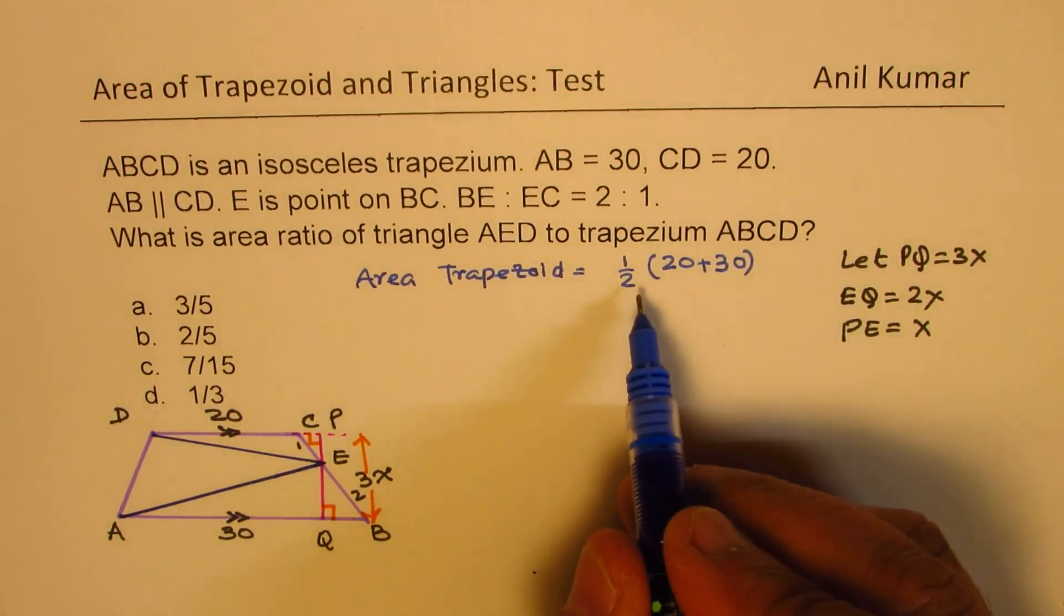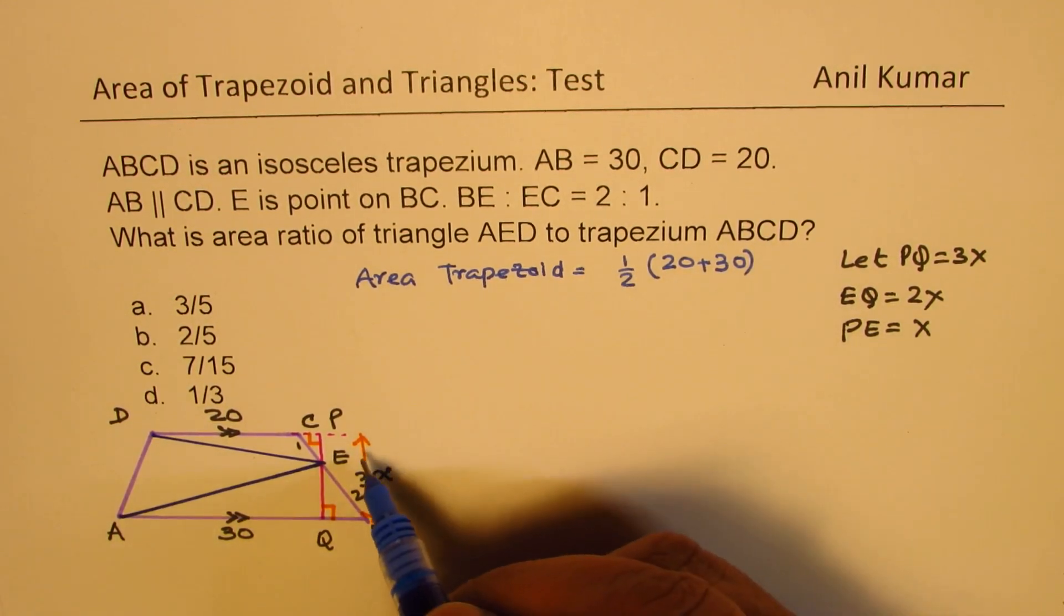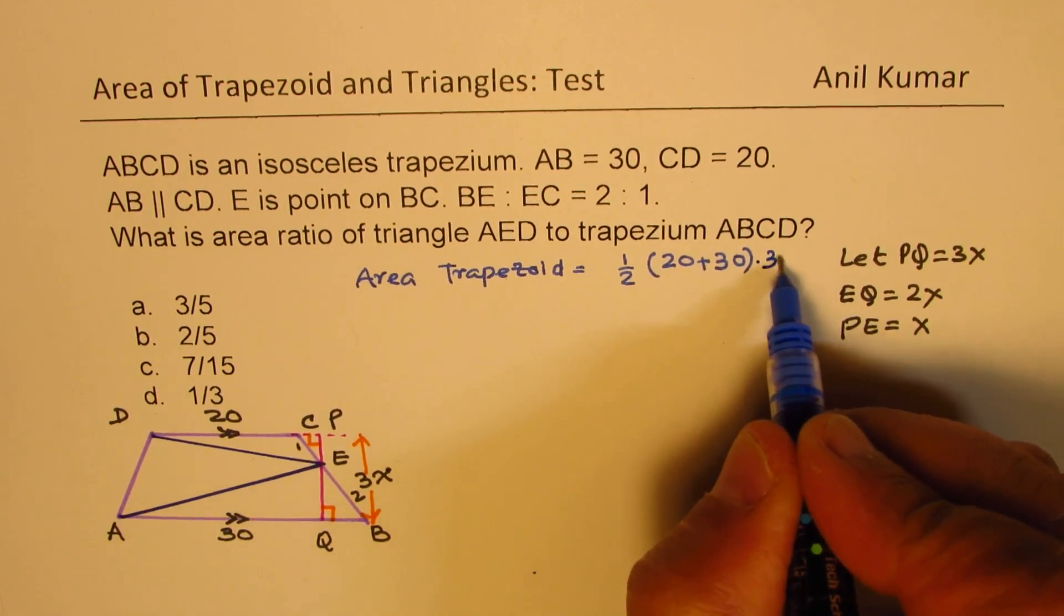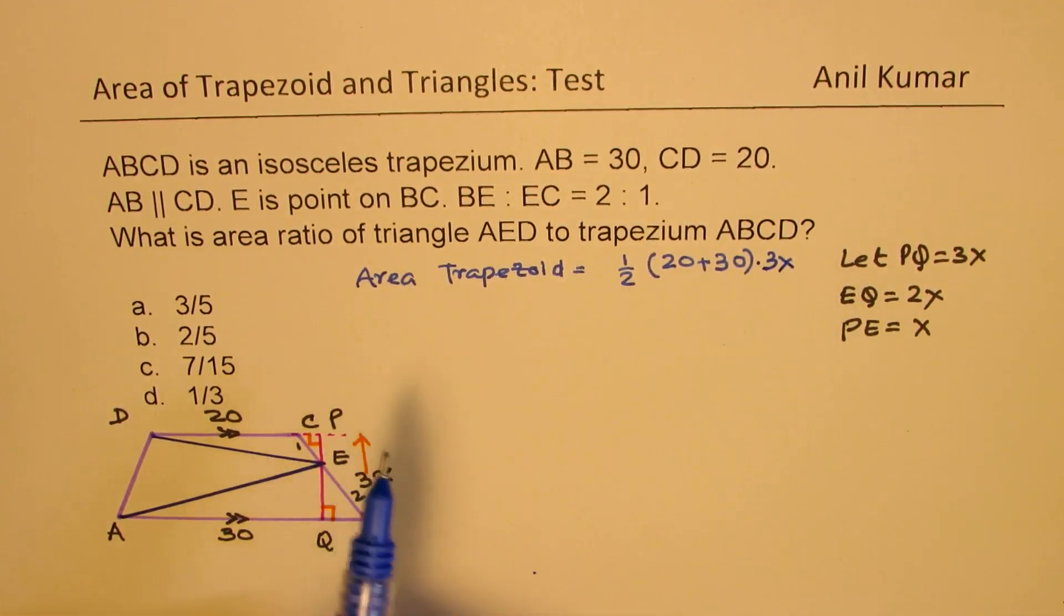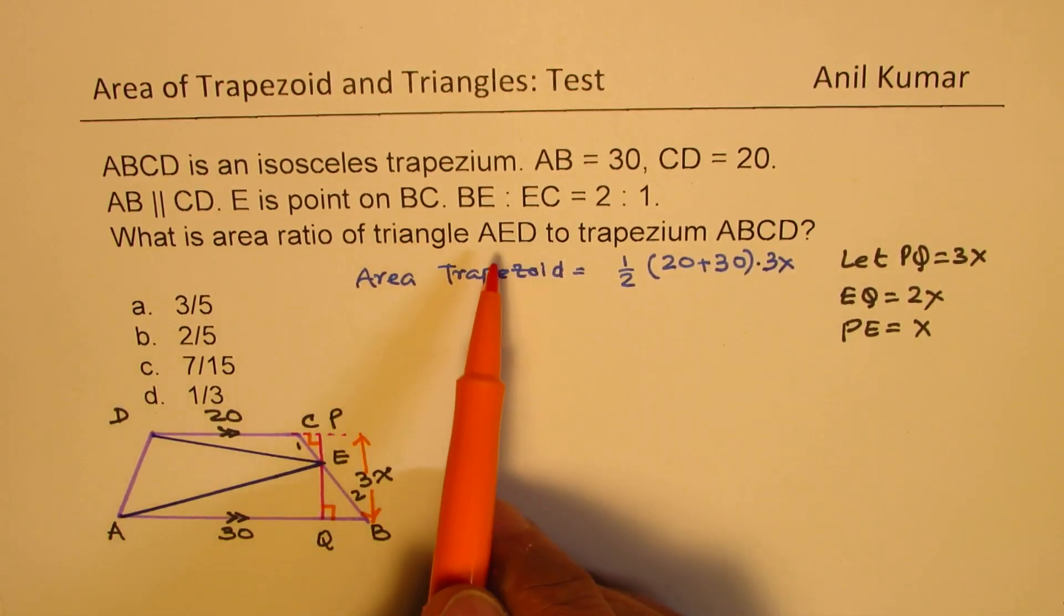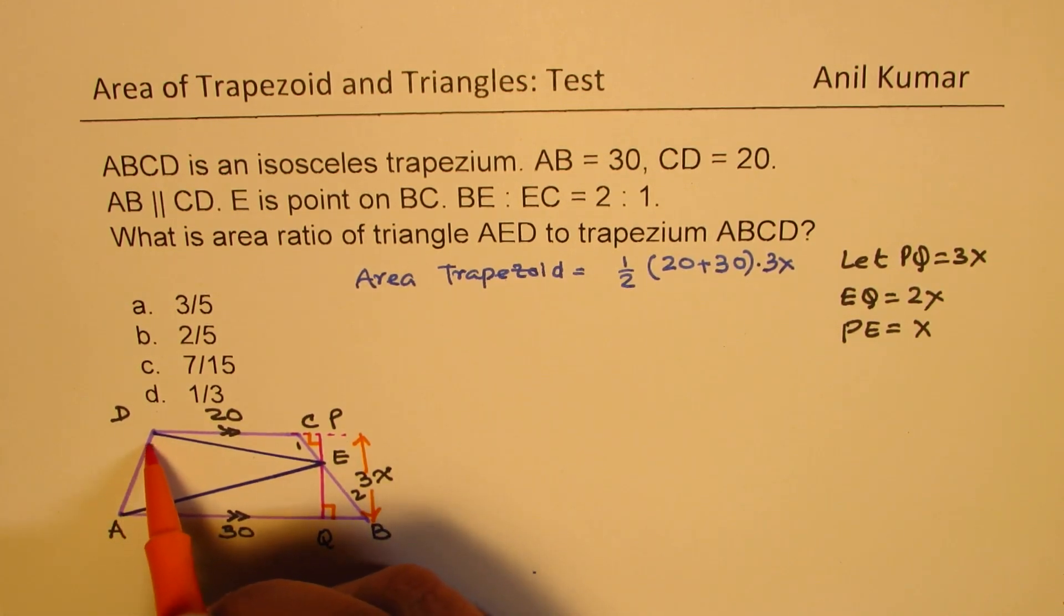So we'll multiply this by the height of this trapezoid, which is 3X. So that becomes area of trapezoid. Now, we are interested in area of this particular triangle, which is AED. AED means this triangle.